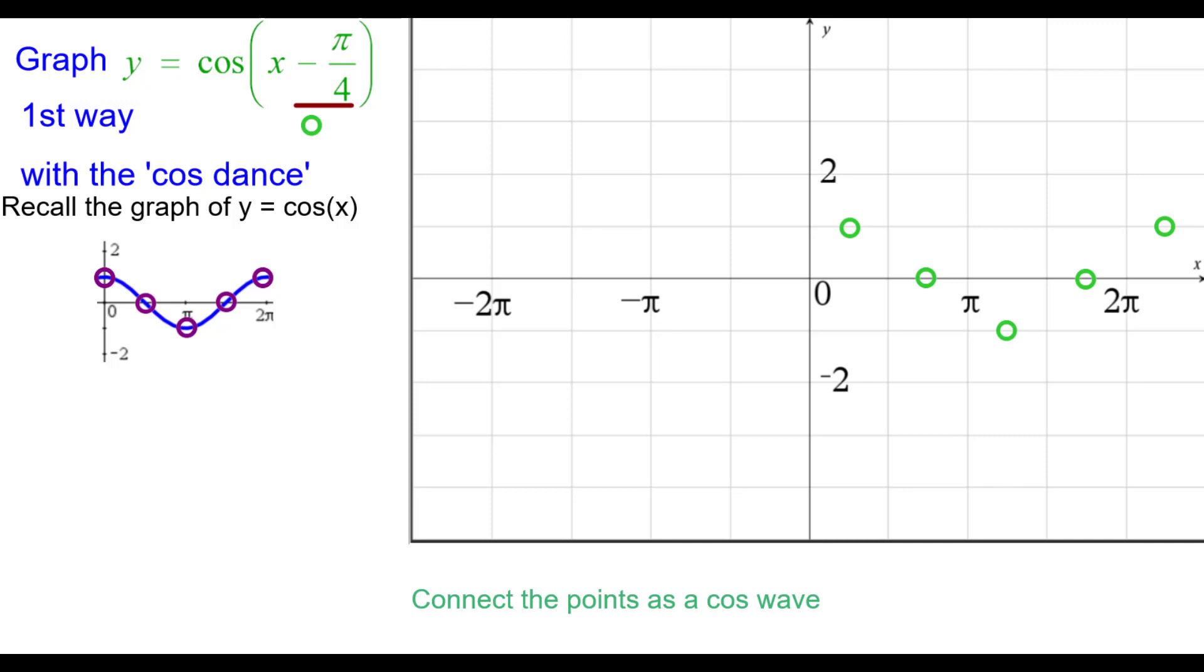So let's go ahead and connect the points as a cosine wave, half of a frown concave down, a whole smile, and half of a frown. This is one period of the cosine wave.